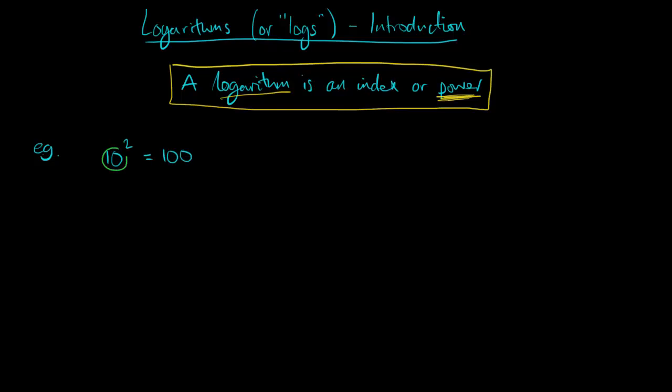You know that 10 squared is 100 and in this relationship the 10 is known as the base and the 2 is known as the power. So if we look at this relationship 10 to the power 2 equals 100 and I've just said a logarithm is a power. So does that mean that in this case the logarithm equals 2?